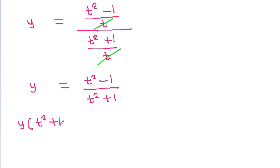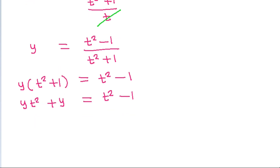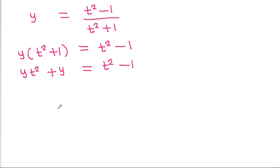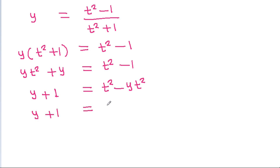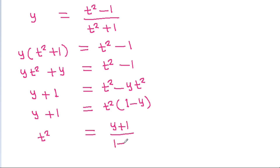So y × (t² + 1) = t² - 1. Expanding: y·t² + y = t² - 1. Rearranging: t² - y·t² = y + 1, so t²(1 - y) = y + 1. Therefore t² = (y + 1) / (1 - y).